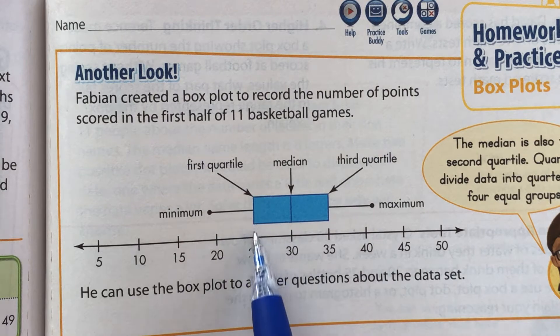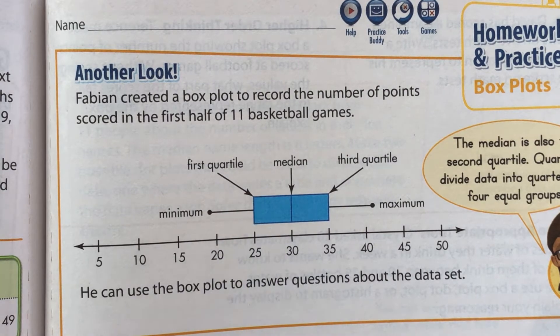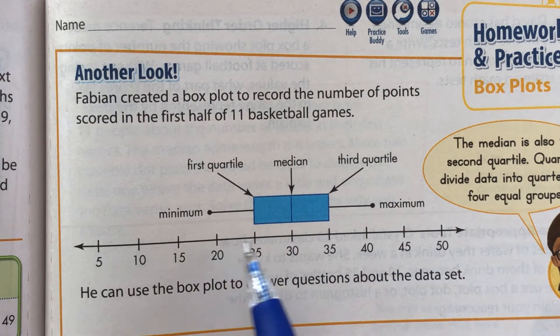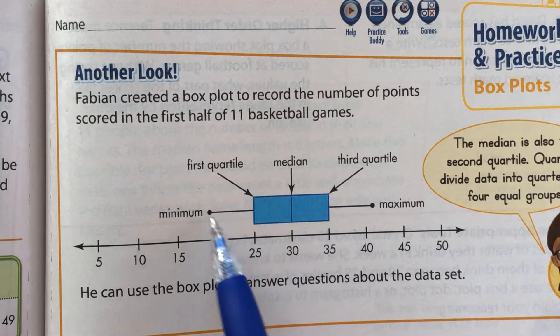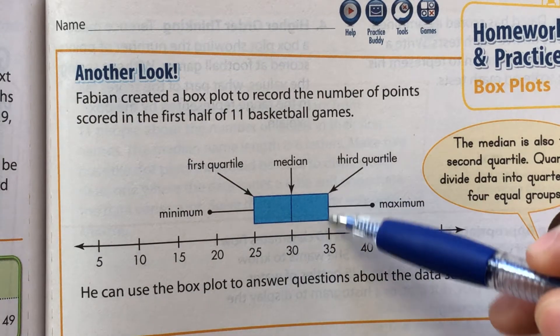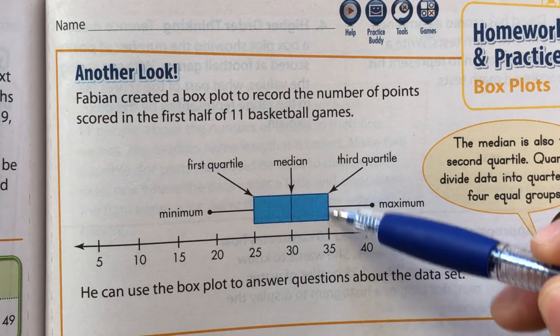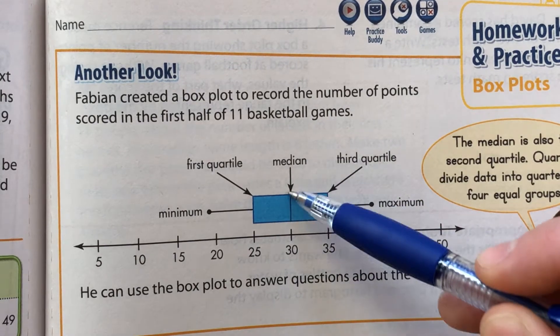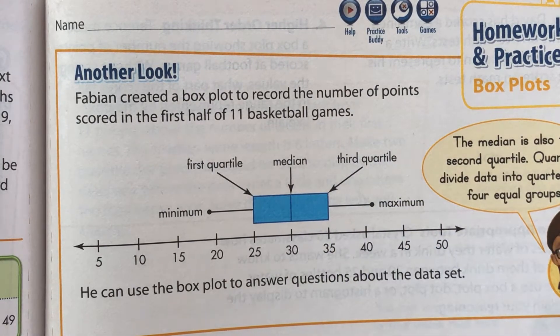Then we have the first quartile. And to find the first quartile, which is the start of your box, that's the median of your first half of data. Your third quartile, or the end of your box, is the median of your second half of data. And then you have your true original median that's right in the middle of your box.